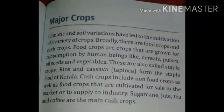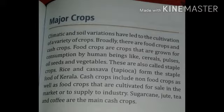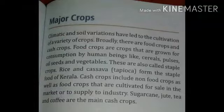Children, climate and soil have helped us to grow a variety of crops. Broadly there are 2 types of crops. First, food crops and second, cash crops. Food crops are grown especially for the consumption by human beings, like cereals, pulses, oil seeds and vegetables. These are called staple crops.